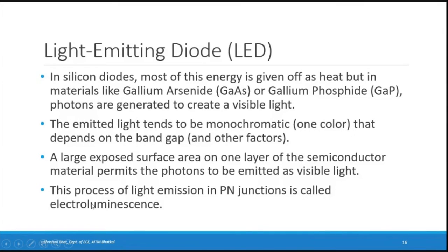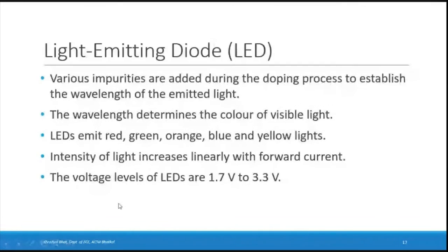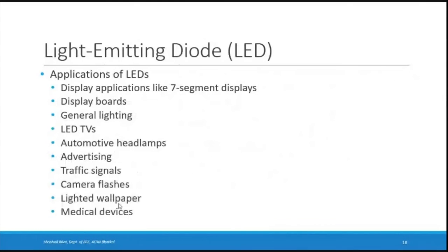This process of light emission in p-n junctions is called electroluminescence — emission of light due to electric energy. To change the color, impurities are added during doping to change the wavelength of emitted light. LEDs emit different colors: red, green, orange, blue, yellow. Intensity increases linearly with forward current, and typical voltage levels are 1.7 to 3.3 volts.